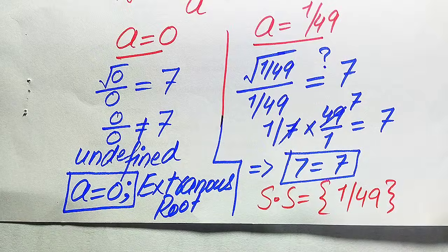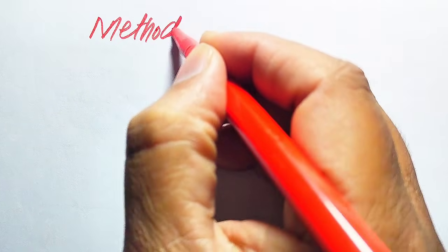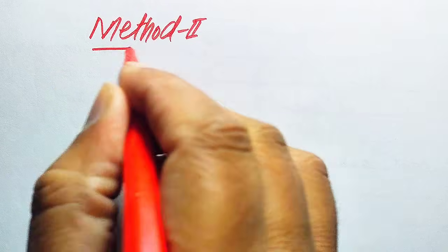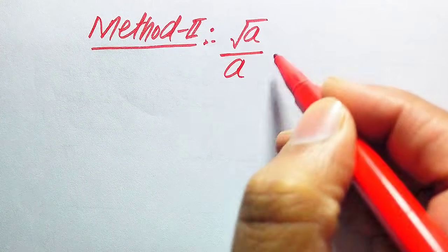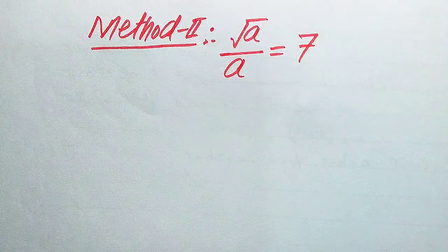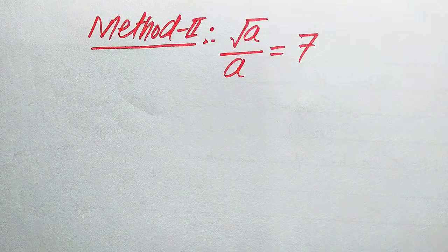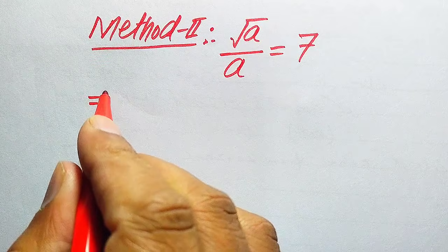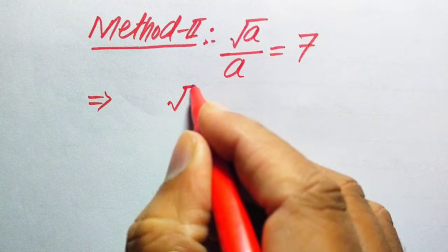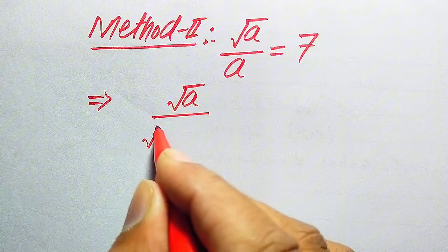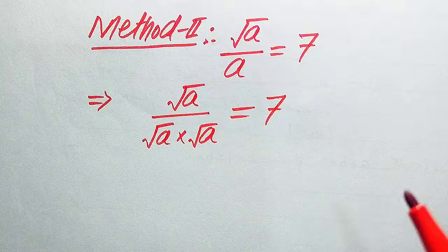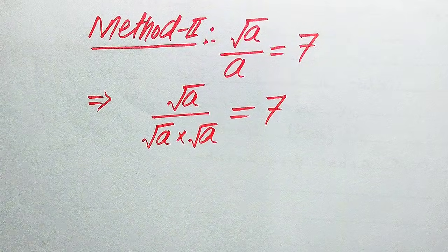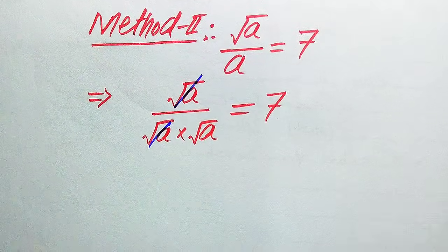Now we solve this problem using the second method. The given question is square root of a divided by a equals 7. In the second method we rewrite the denominator a as square root of a multiplied by square root of a. So we have square root of a divided by (square root of a times square root of a) equals 7. The square root of a in the numerator cancels with one square root of a in the denominator.